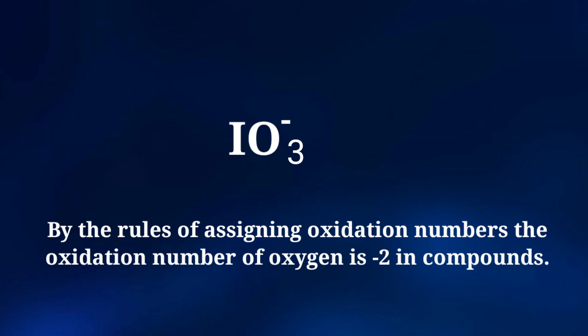By the rules of assigning oxidation numbers, the oxidation number of oxygen is minus 2 in compounds. We can write the oxidation number of the element above its symbol and the total number of the oxidation number of the atoms below its symbol.